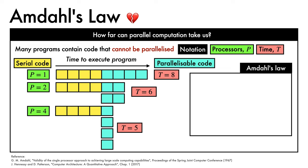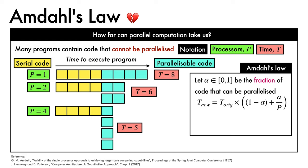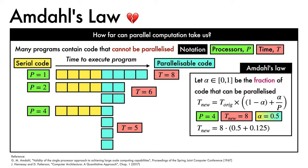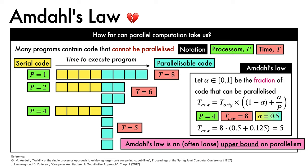We are deep into diminishing returns territory — this tragedy is what Amdahl's law captures. Let alpha be the fraction of code that can be parallelized. Then the best time we can achieve on p processors is the original time multiplied by (1 minus alpha) plus alpha over p. In our example, with p equals 4, original time 8, and alpha equals 0.5, the accelerated time is 8 times (0.5 plus 0.125), which equals 5, agreeing with our visualization. This is in fact a best-case scenario, as Amdahl's law gives an upper bound that is often loose.